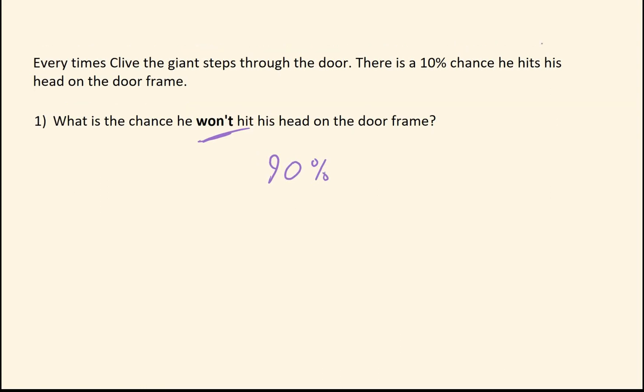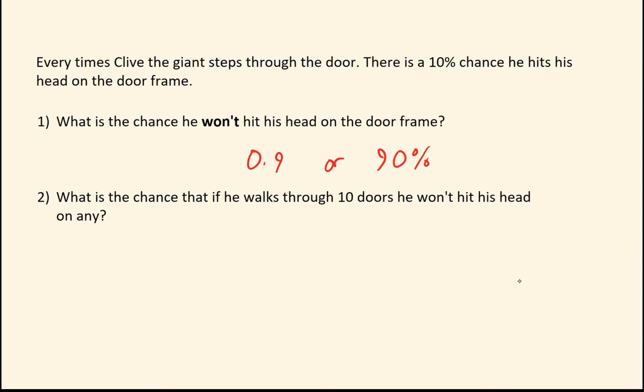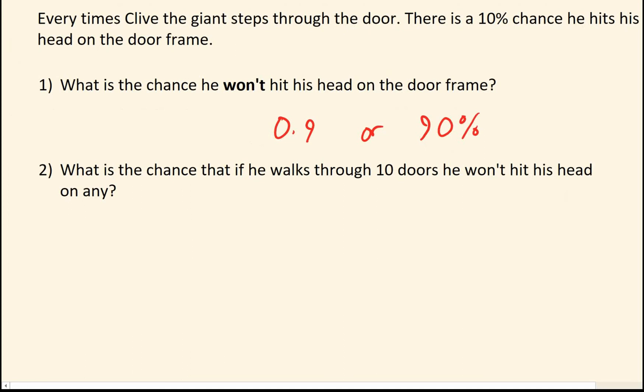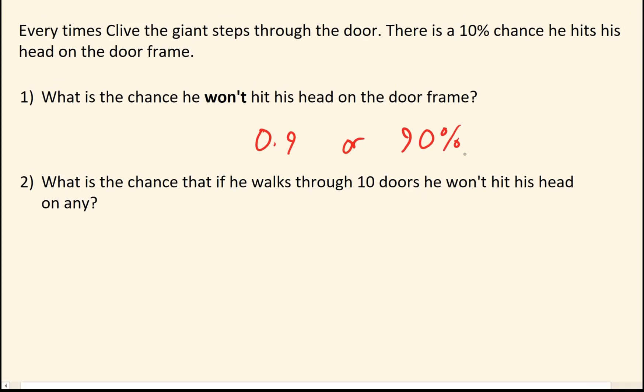That was fairly basic. We can take this slightly further by asking the question, what is the chance that if he walks through 10 doors, he won't hit his head on any of them? So therefore I need to win this probability check 10 times in a row.